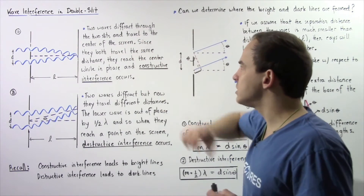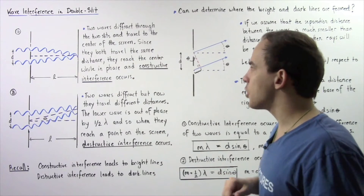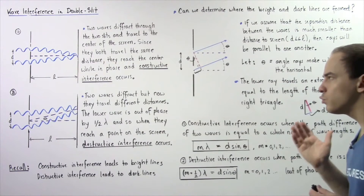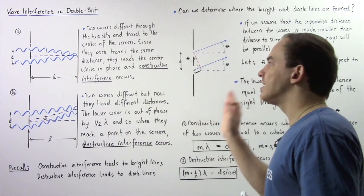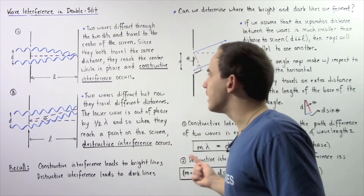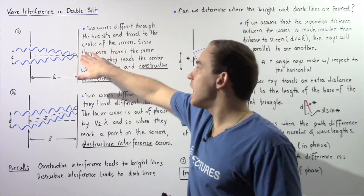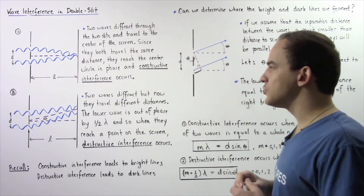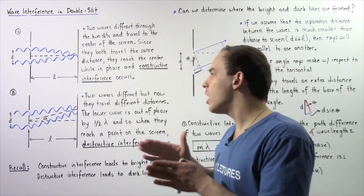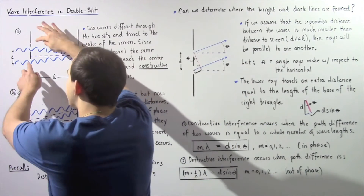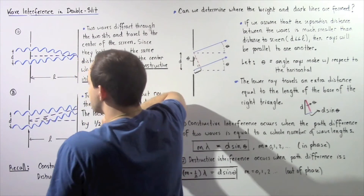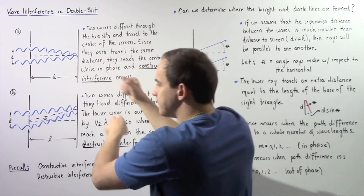They diffract through the two slits and travel to the center of the screen. Since they both travel the same distance, they reach the center while in phase and constructive interference occurs, leading to bright lines or bright fringes on the screen. Now let's move on to diagram B, where we're choosing two other waves. When the waves of light hit the slits, they diffract in all different directions.